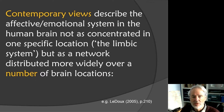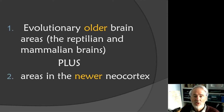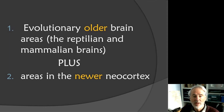Contemporary views on the brain describe the affective system as concentrated not in one specific location — the so-called traditional limbic system — but more as a network involving areas in the limbic system distributed more widely over a number of different locations, in a more brain-wide sense. This involves parts of the brain that are evolutionarily older, namely the reptilian and mammalian brains, plus areas in the newer neocortex, which is so well developed in humans.